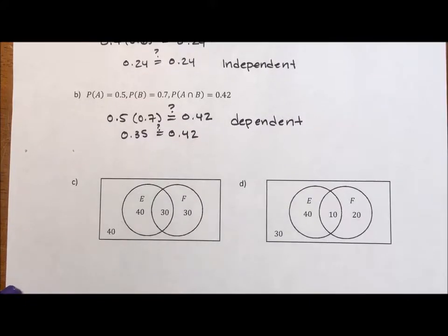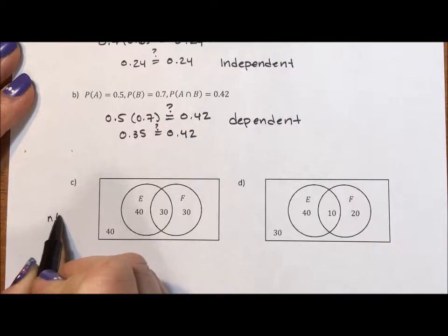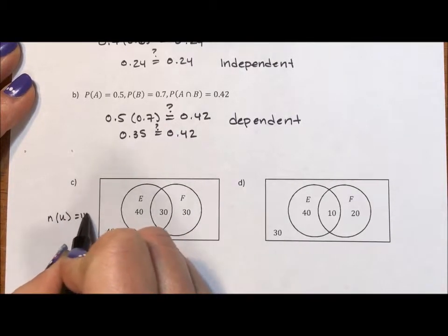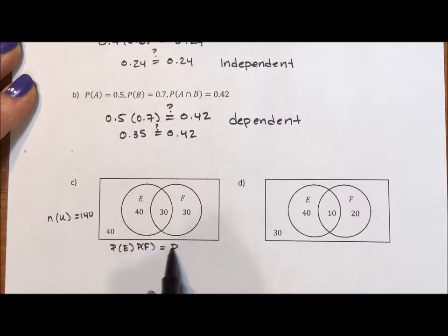So for C, what we need to do is we need a few numbers. First of all, we need the number of elements in the universe. So the number in the universe is 40 plus 40 plus 30 plus 30, which is 140. And now we can test the probability of E times the probability of F. Does this equal the probability of E intersection F?